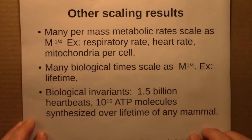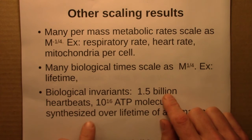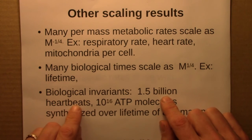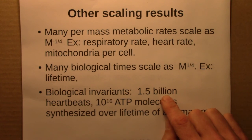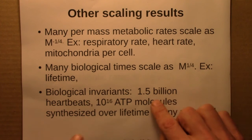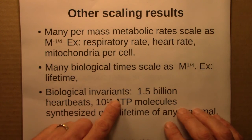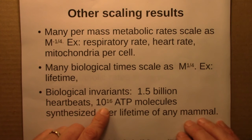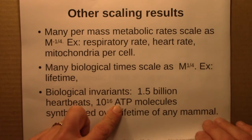For mammals, this invariant turns out to be about 1.5 billion heartbeats. So mice, whales, elephants, humans, and foxes will all have about 1.5 billion heartbeats on average in their lifetime, which corresponds to the processing of 10 to the 16 ATP molecules.